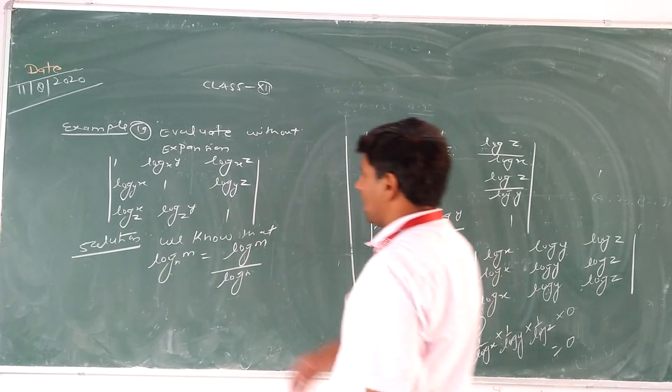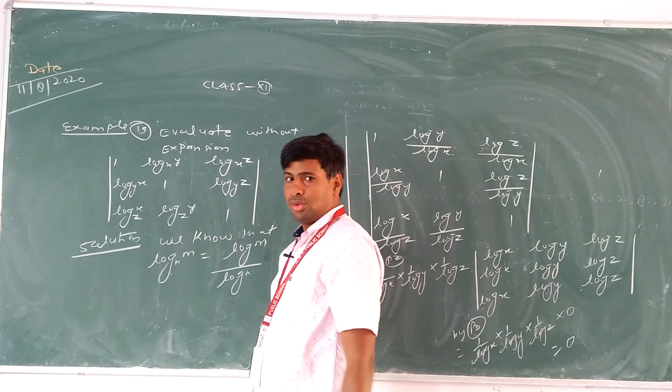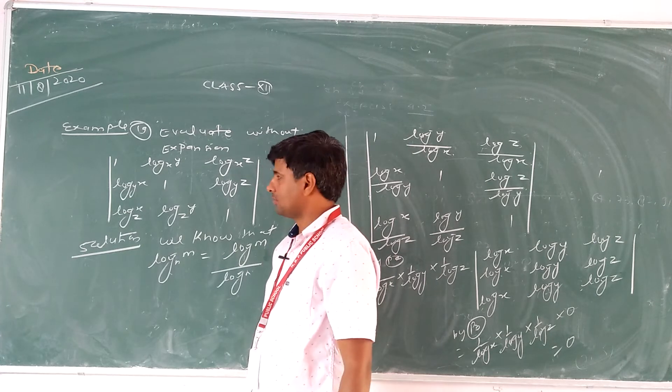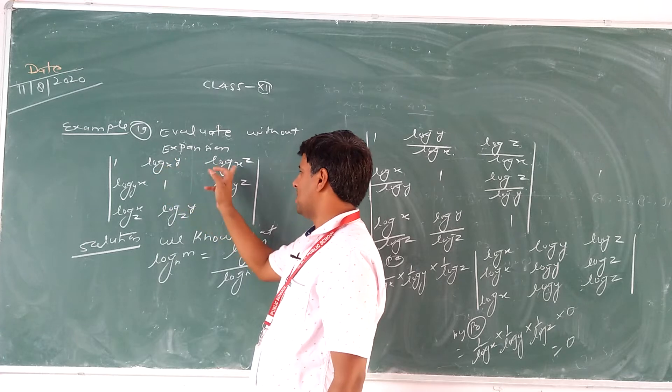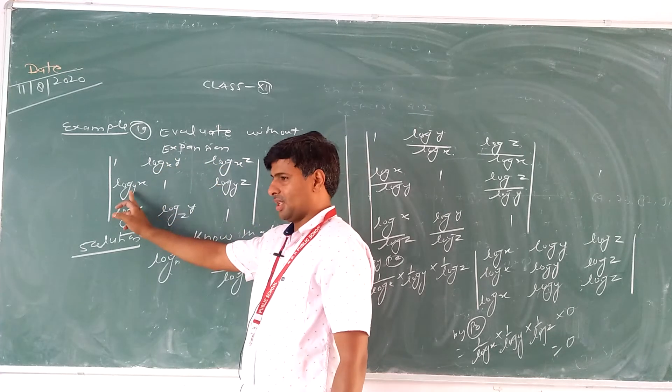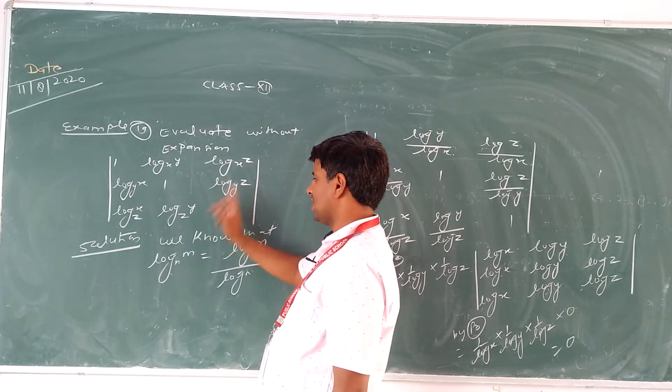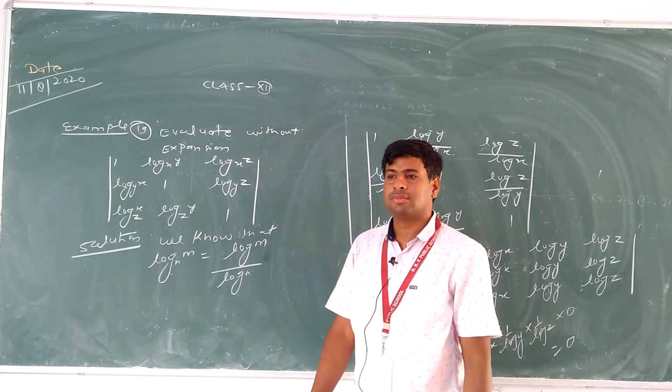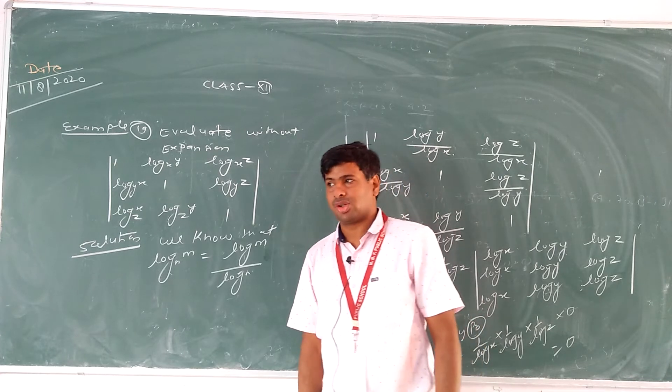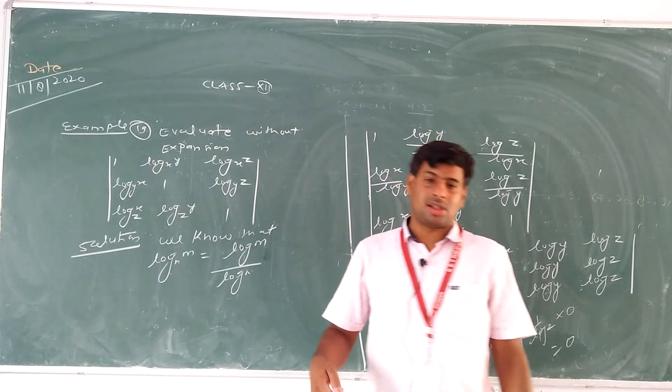90 is given as an array without using expansion: 1, log x with x and y, x and z; y and x, 1, log y and z; z and x, y and z, 1. Without using expansion.